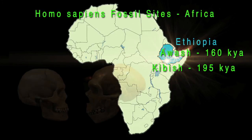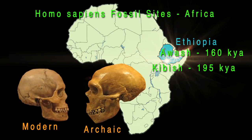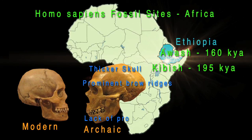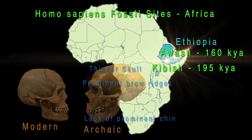Analysis of the fossils of Homo sapiens idaltu found them to be transitional between older archaic humans and fully modern humans. Archaic human characteristics would be those exhibited by earlier members of the genus Homo such as heidelbergensis and neanderthalensis. Characteristics which would differentiate archaic humans from anatomically modern humans would include a thicker skull, prominent brow ridges, and lack of a prominent chin. As evolution is a gradual process, one would expect to find transitional characteristics as the genus Homo evolved from archaic forms to anatomically modern humans. This is exactly what we see in the fossils of Homo sapiens idaltu.